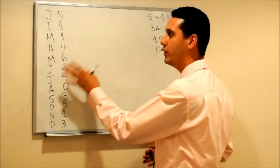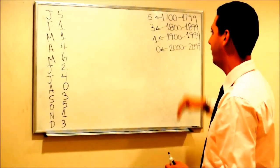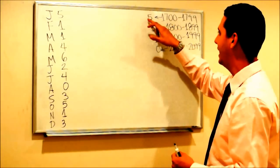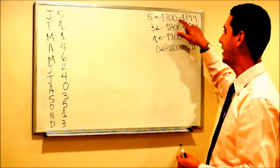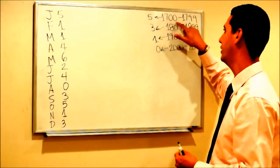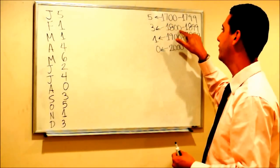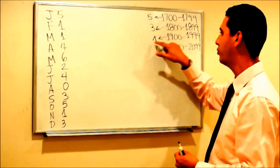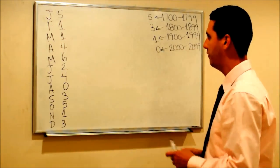Here we have displayed four numbers for each century. For the 18th century, which is between 1700 and 1799, the number to use is 5. For the 19th century it's 3, for the 20th century it's 1, and for the 21st century it's 0.